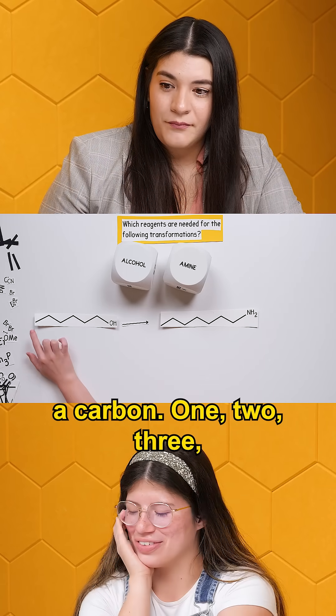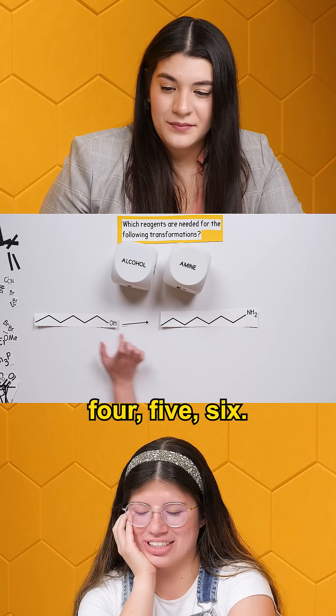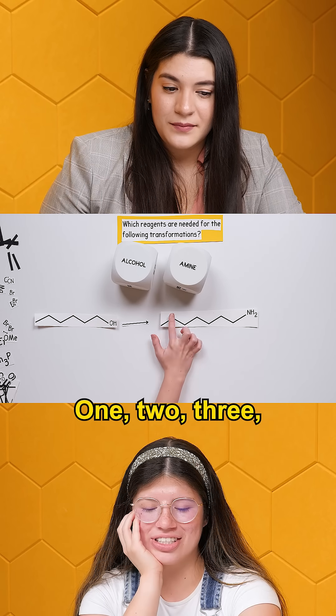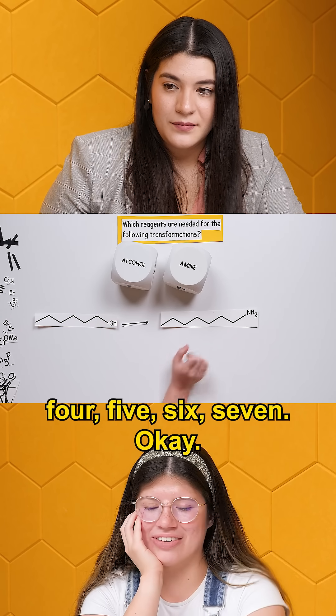So we definitely added a carbon. One, two, three, four, five, six — and one, two, three, four, five, six, seven. So we're going from a six-carbon alcohol to a seven-carbon amine.